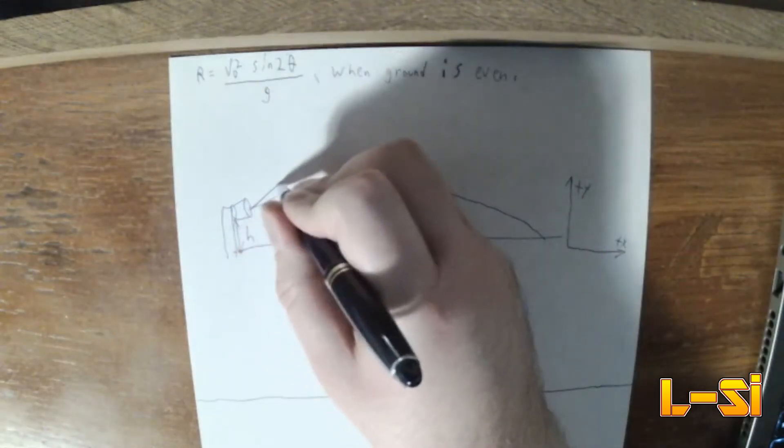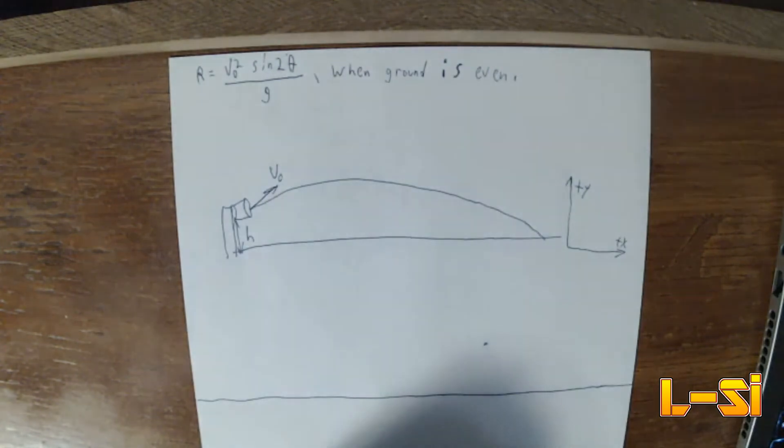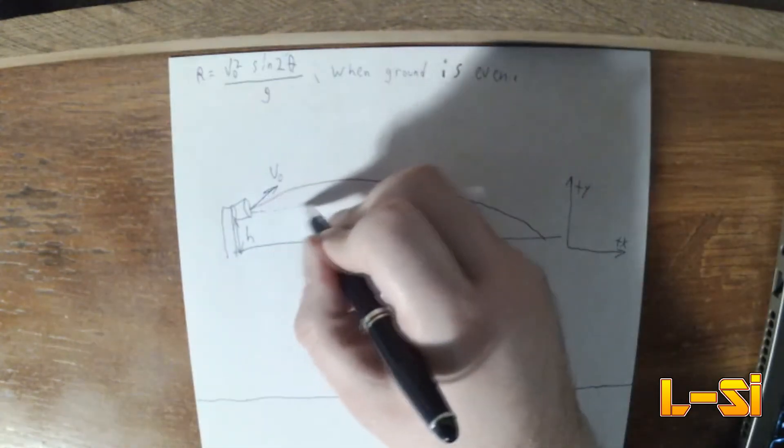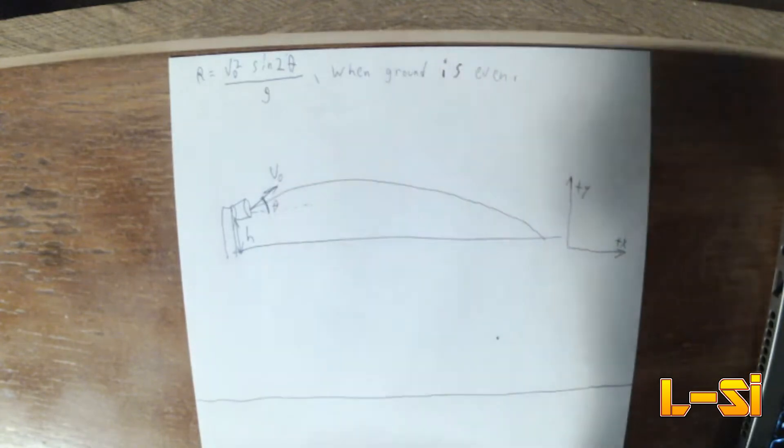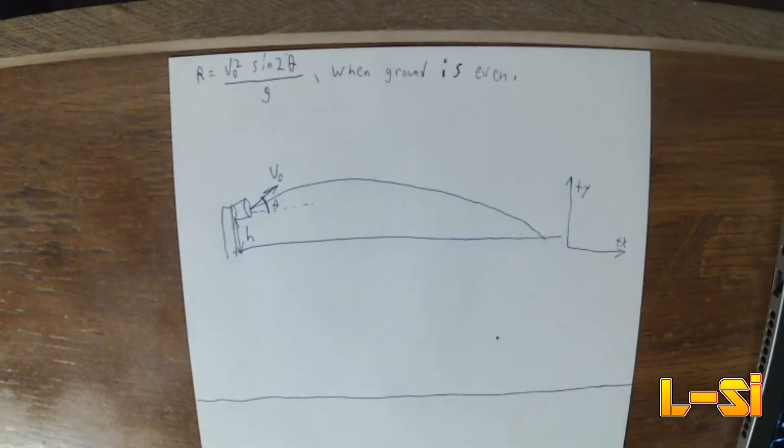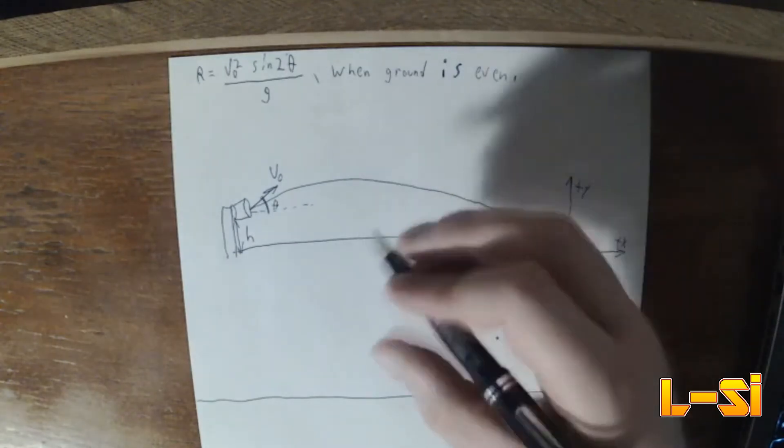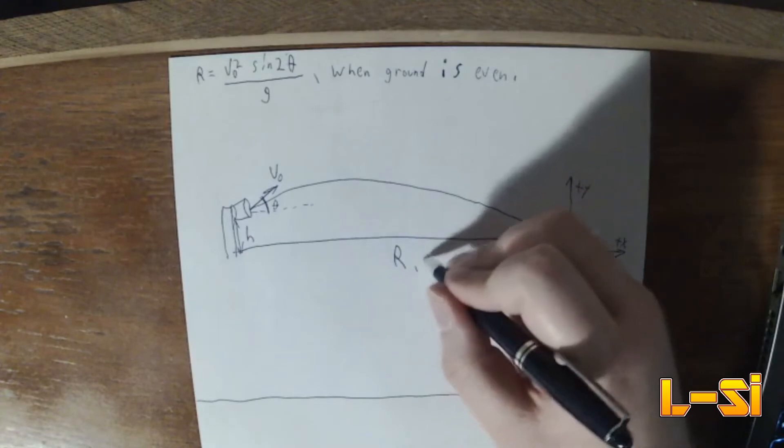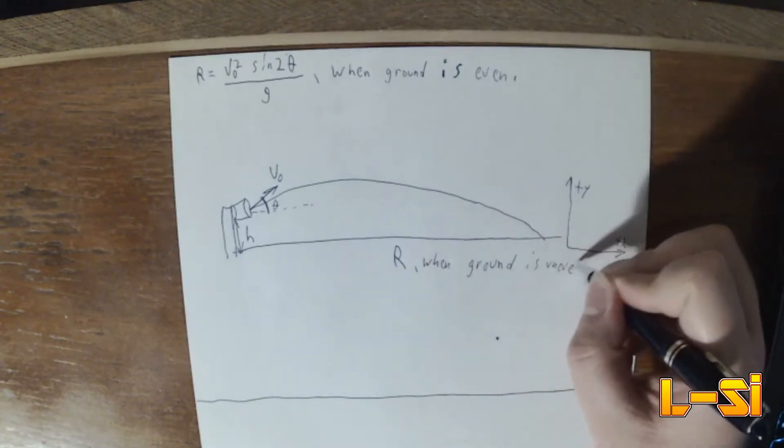And we're going to say, once again, that the projectile is launched with some initial velocity, V-naught. Now, it's going to be launched off the horizontal by some angle, that angle we're going to call theta. And we're doing all this algebraically so we can apply it to a variety of different situations. So we want to find max range. So this is when ground is even. Now we want to find R when ground is uneven. So what are we going to do?